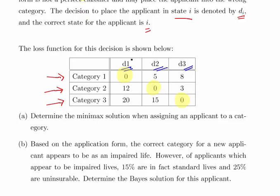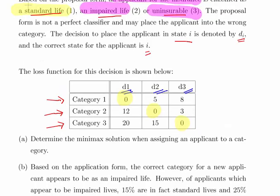But if we misclassify them, for example, if we classify them as a standard life when they actually are uninsurable, there's a loss of 20. You can see that the losses are very substantial. Determine the minimax solution when assigning an applicant to a category.